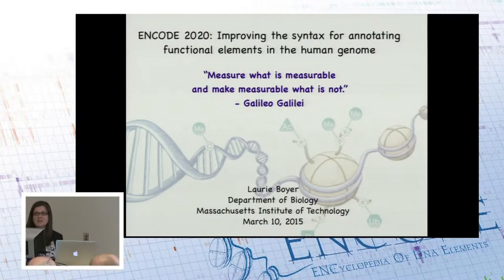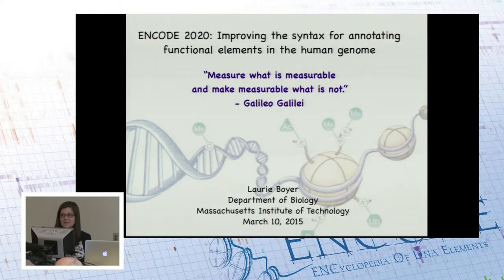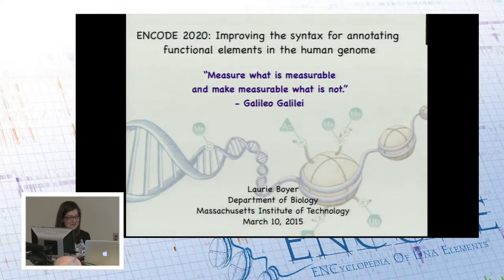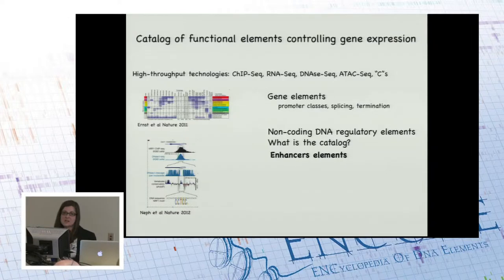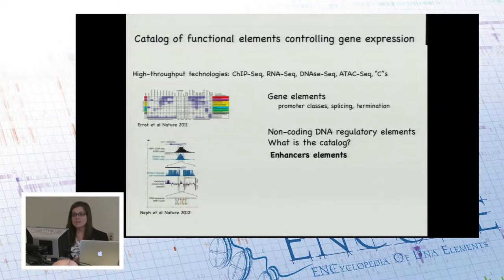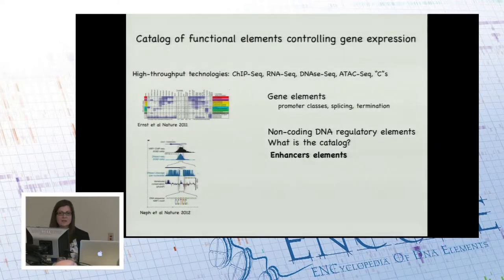I really like this quote from Galileo because I think it's very fitting for ENCODE — hopefully at the end of this we can make measurable what is not currently measurable. For today's talk, even though our catalog of functional elements is incomplete, ENCODE has largely focused on elements that control gene expression. I think it's important to expand beyond that gene-centric view, as Ross touched on.